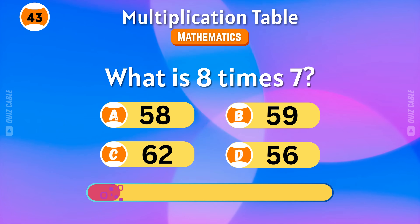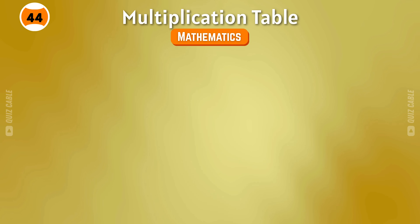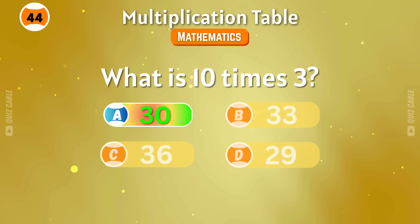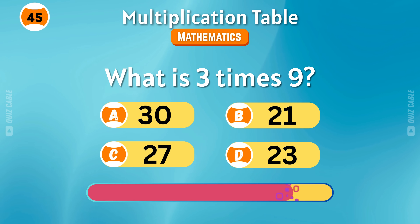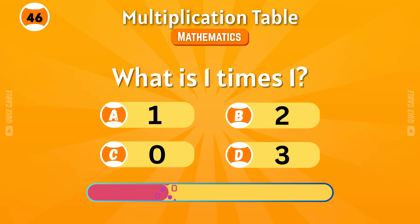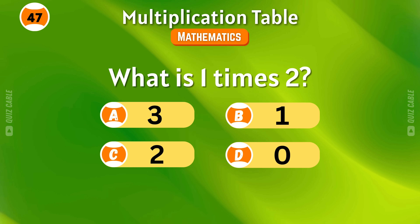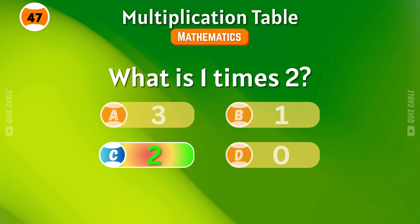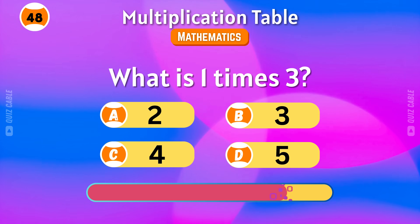What is eight times seven? Fifty-six. What is ten times three? Thirty. What is three times nine? Twenty-seven. What is one times one? One. What is one times two? Two. What is one times three? Three.